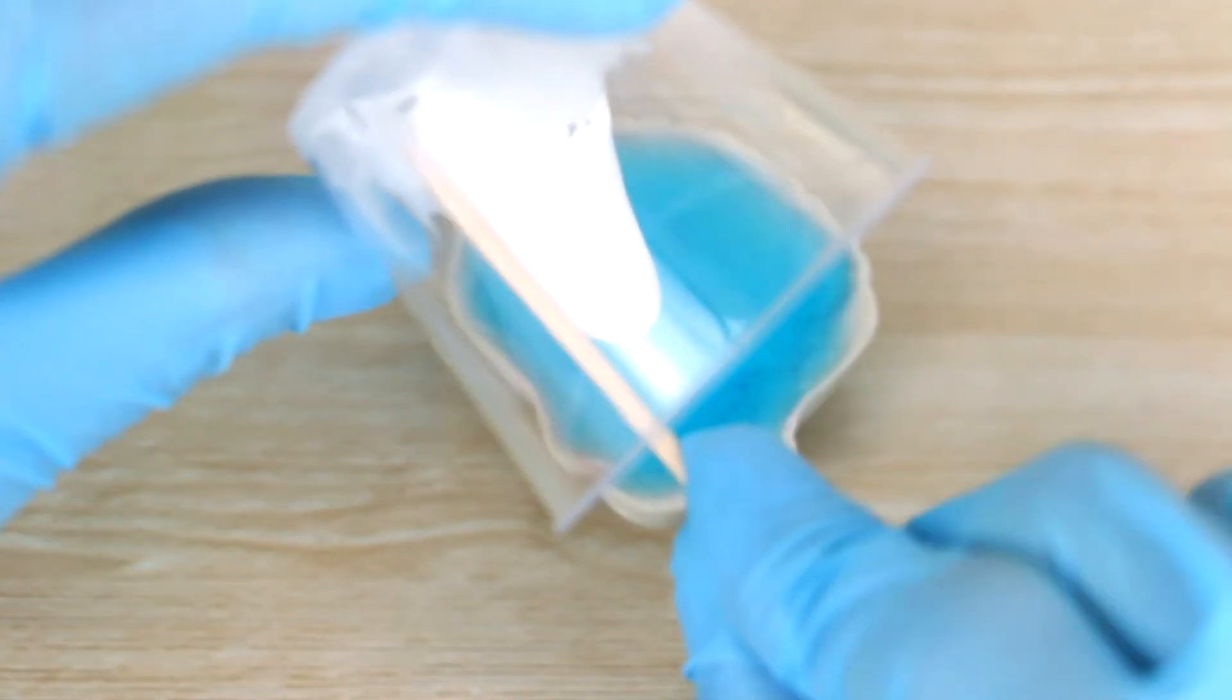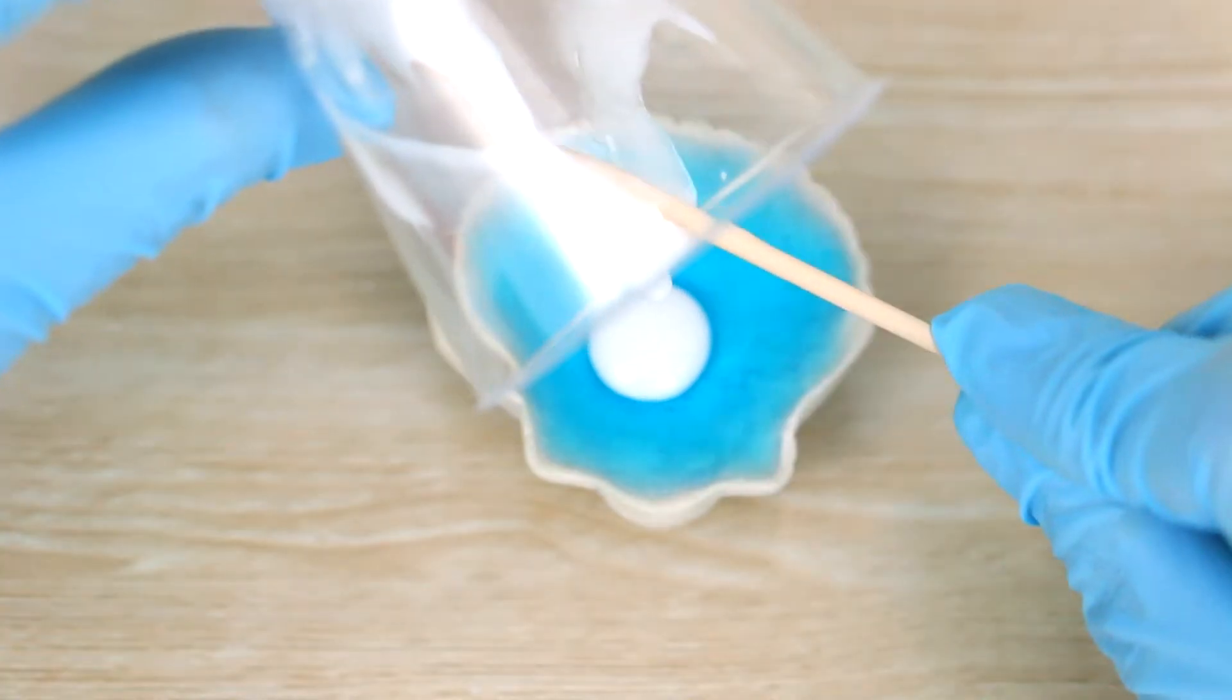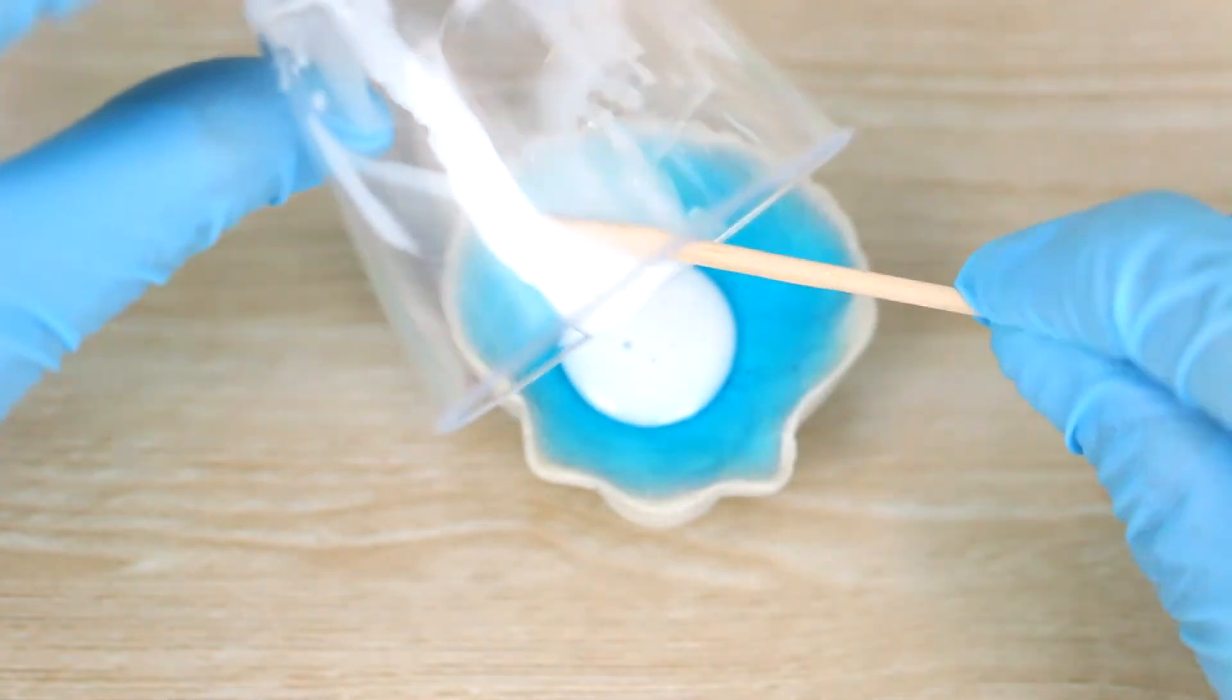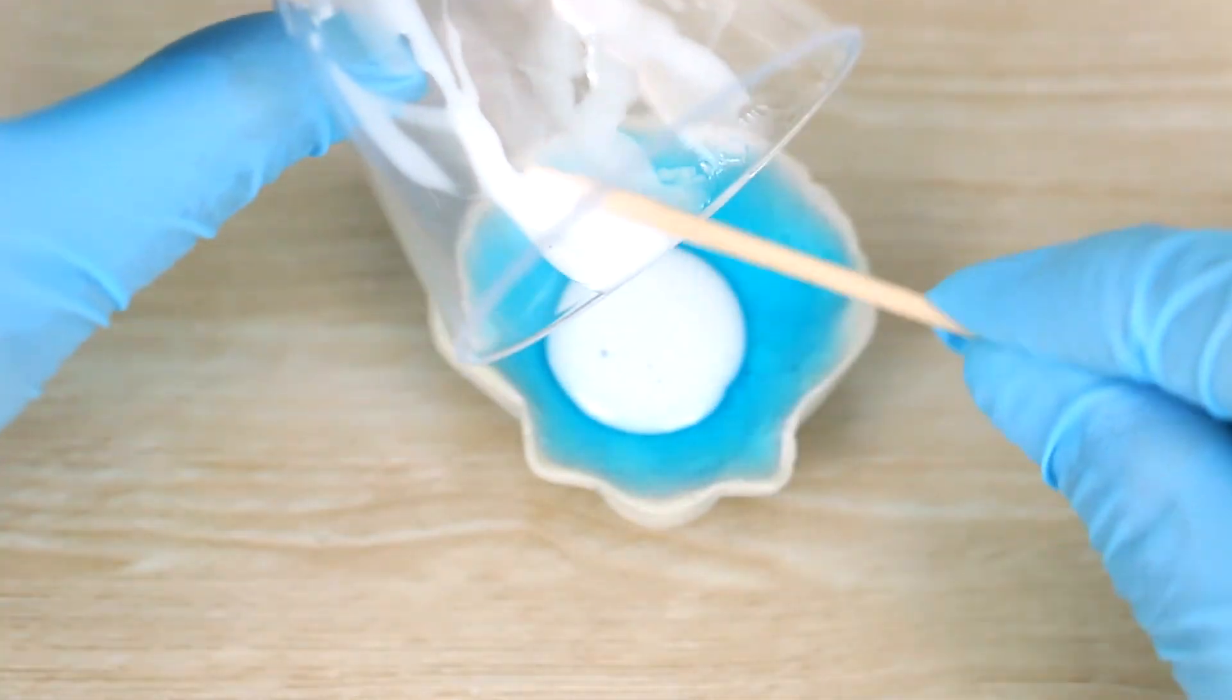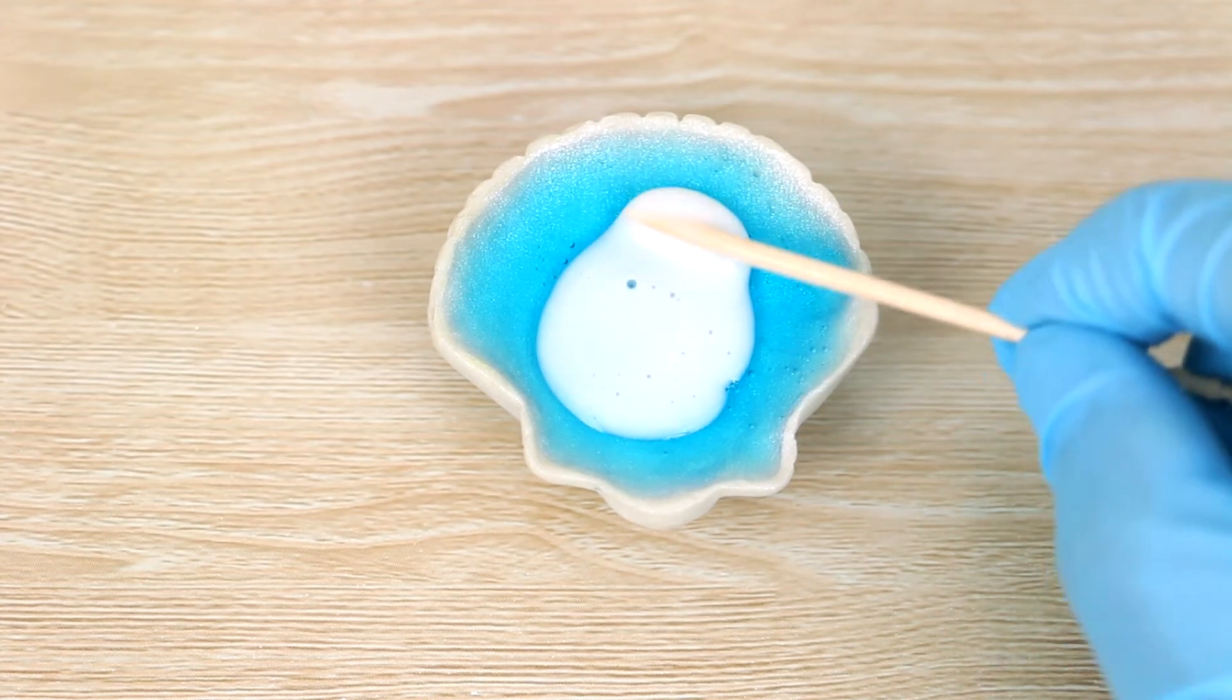So once that's fully cured, I've mixed up some white resin the same way that I did with the blue, and I'm pouring that on top, and then spreading that all over.